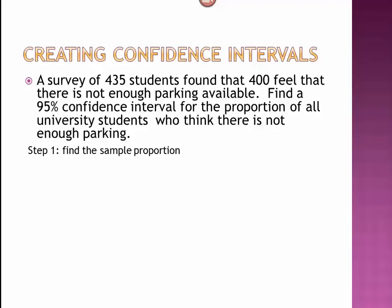First, in this case, we need to figure out what our sample proportion actually was. 400 is not our sample proportion. Those are just the people who said yes out of the 435. So our proportion is the ratio of those two numbers, 400 over 435, which is 0.92.